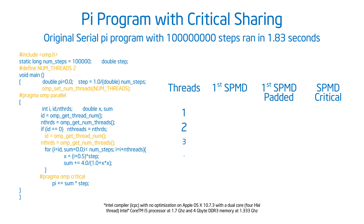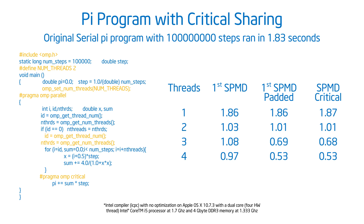Let's look at the results from my program. Here are the results from before where I did the original PI program, and then I did it with padded. Using the critical section, I get pretty much the same quality of answers and the same performance as I got when I padded the array. But now it's portable — a clean, portable implementation. I don't have to work into the program the size of an L1 cache line. So as I move to a different machine with different cache architecture, I'm not going to suddenly have a program that went from good performance to poor performance.